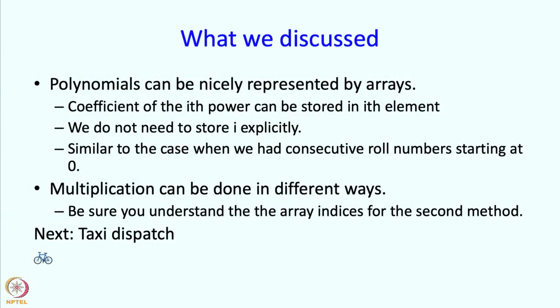Alright, so what did we discuss? We said that polynomials can be nicely represented by arrays. The coefficient of the ith power can be stored in the ith element and we do not need to store i explicitly. Just the position tells us, the position of the coefficient in our memory tells us what i it refers to. And this is actually very similar to the case when we had consecutive roll numbers starting at 0. Then we also saw that multiplication can be done in different ways and especially the second way is slightly trickier and I would request you to go over that, maybe print out the indices that get accessed in the loop if you are not sure. So there are two ways and please also look at the exercises that were given. So in the next segment we are going to discuss a somewhat longish problem called taxi dispatch which uses the array in another interesting manner but we will take a quick break.